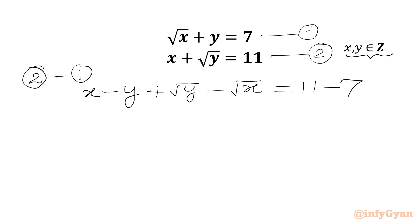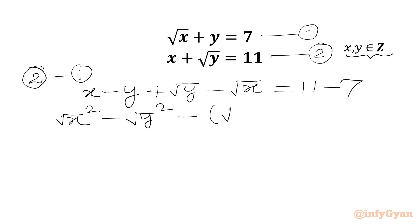Now we can write x as square root x whole square, and y can be written as square root y whole square. Then we have root y minus root x, so we can take minus common from here. I will write minus common from root x minus root y. The right-hand side will be 4.